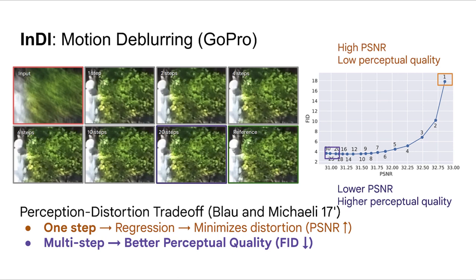There is a trade-off between the average distortion, here represented by PSNR, and the FID score, which correlates with perceptual quality. This is a well-known perception distortion trade-off. With INDI, we can actually traverse this trade-off by controlling the number of steps we use in the reconstruction.